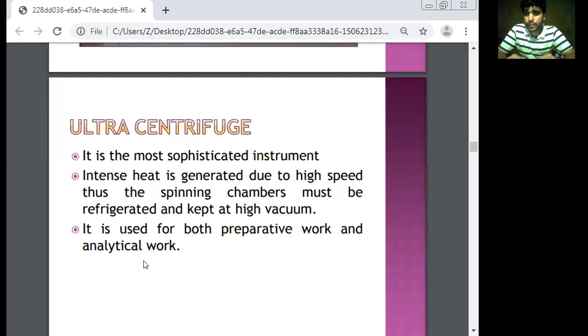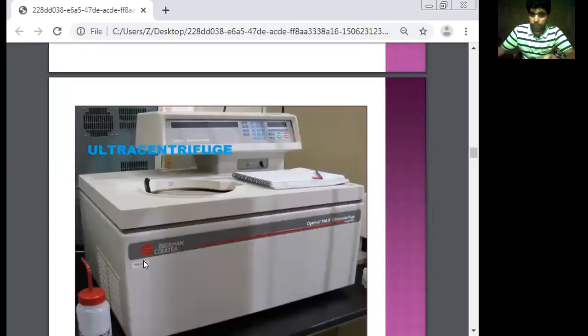Ultracentrifuge is the most sophisticated centrifuge instrument with intense generation of high speed. The spinning chamber must be in high vacuum. It is used for both preparative work and analytical work. Especially spinning chambers and vacuum, we can see here. This means ultracentrifuge is used in high technique work. We can separate plasma, serum, RBC, WBC, platelets - for each component we can use ultracentrifuge.